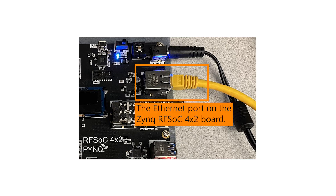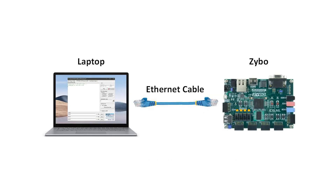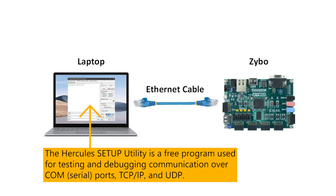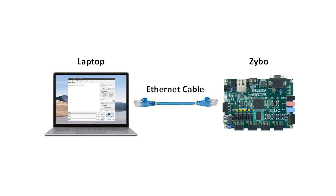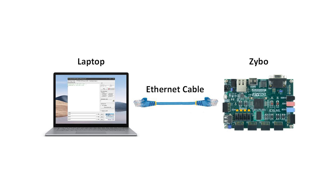How does Ethernet work? To explore this, we conducted a simple experiment utilizing Ethernet to control an LED. Here is a simple block diagram of the system that we are going to build. On the PC, we have the Hercules program as a TCP client — we learned how to use this in the previous couple of videos. The PC is connected to the FPGA board with an Ethernet UTP cable. On the FPGA board, we have a TCP server application built with Python to receive messages from the PC and control the LED, which we also covered in the previous videos.